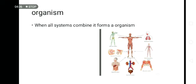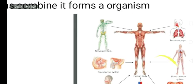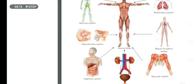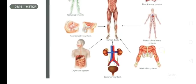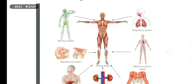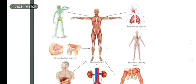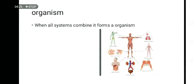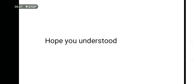When all systems combine it forms an organism. We have the digestive system, muscular system, blood circulating system, respiratory system, nervous system, reproductive system in a human body. And that makes an organism. Hope you understood.